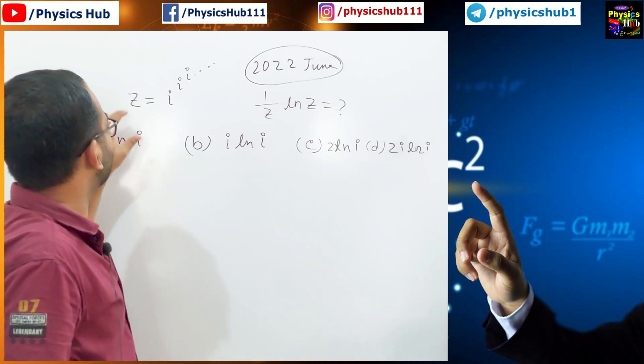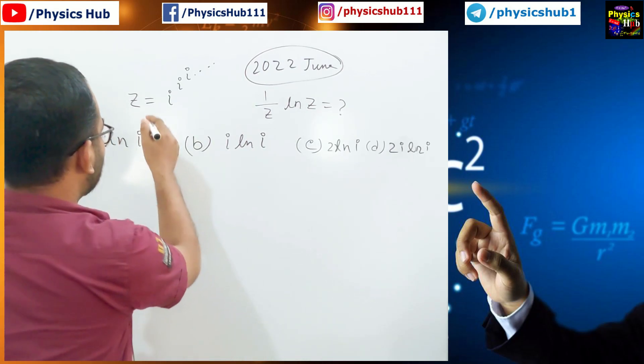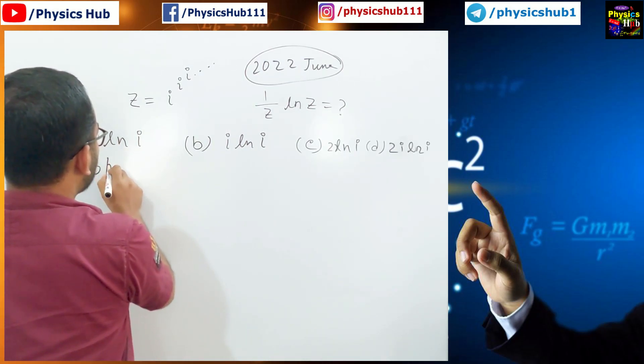You are given this function z equals i to the power i to the power i and it is extending up to infinity. What we can do to solve this problem?